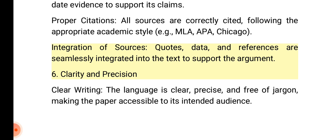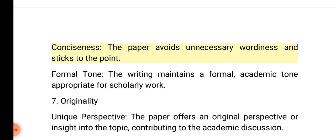6. Clarity and precision. Clear writing: The language is clear, precise, and free of jargon, making the paper accessible to its intended audience. Conciseness: The paper avoids unnecessary wordiness and sticks to the point. Formal tone: The writing maintains a formal, academic tone appropriate for scholarly work.